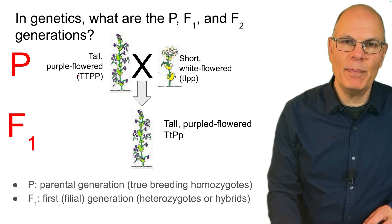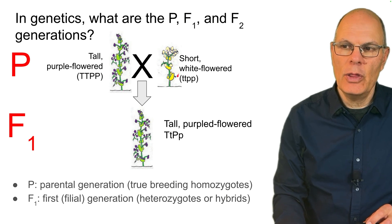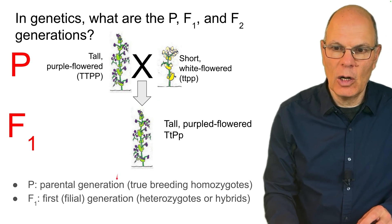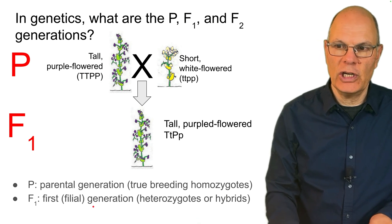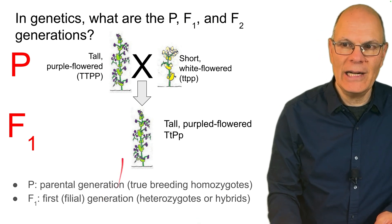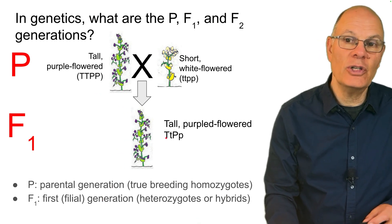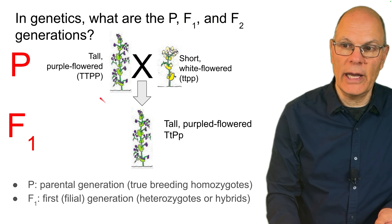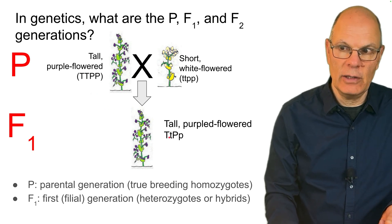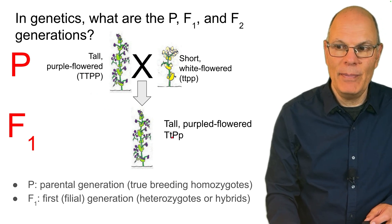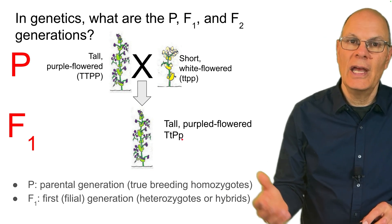When you breed the P generation together, those offspring are called F1s — the first filial generation. In this case, they're heterozygotes, specifically double heterozygotes: big T, little t (a heterozygote) and big P, little p. So double heterozygotes.